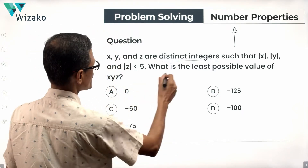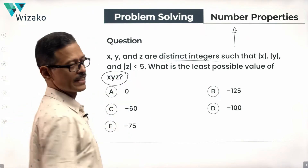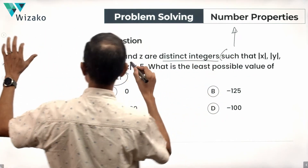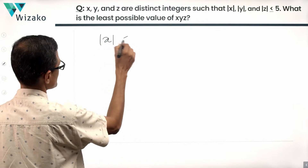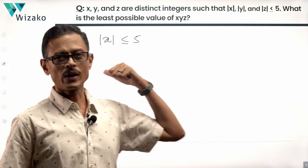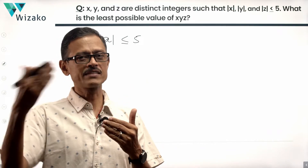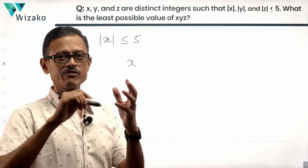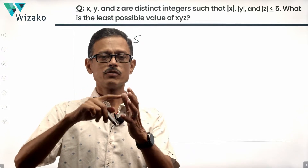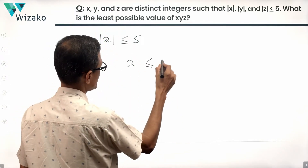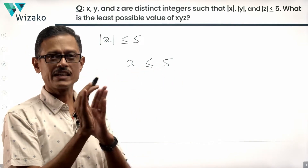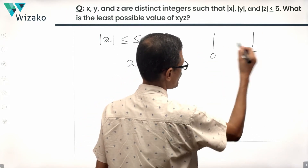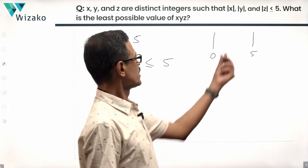We'll make sense of that constraint now. The modulus of x is less than or equal to 5, and the same holds for y and z. If x is positive, it could be an integer starting from 0, 1, 2, 3, 4, or 5. So in the positive spectrum, x can take values from 0 to 5. Its magnitude can start from 0 and go up to 5, and since it says less than or equal to 5, it can also be 5.